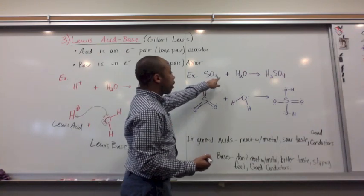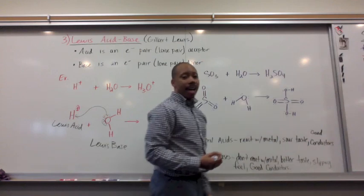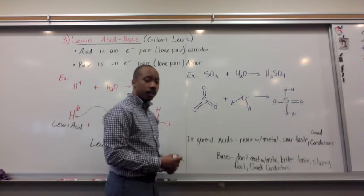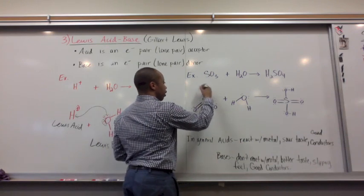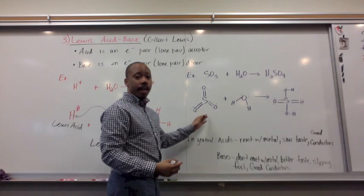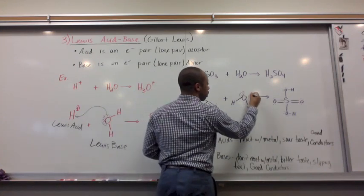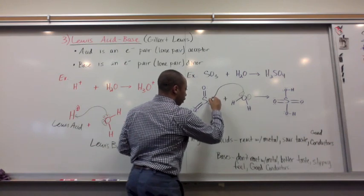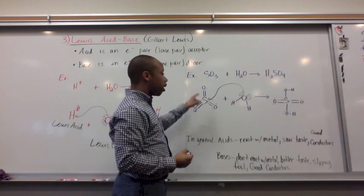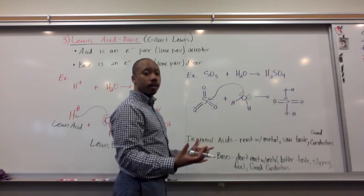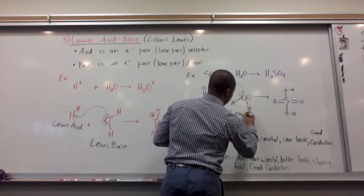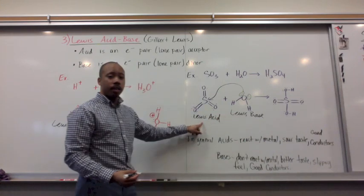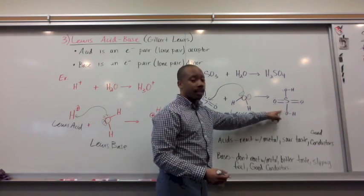Another example: sulfur trioxide reacting with water, forming sulfuric acid. In the Lewis structure, sulfur is attached to three oxygens, double bonded at each site. Water has lone pair electrons that will attack this sulfur, bonding on and expanding sulfur's octet. Since these electrons are being donated, water is the Lewis base. Since sulfur trioxide is accepting the lone pair electrons, it is the Lewis acid. They form sulfuric acid with that chemical formula.